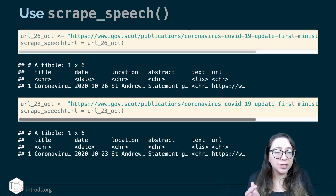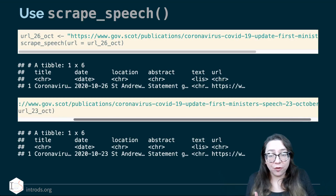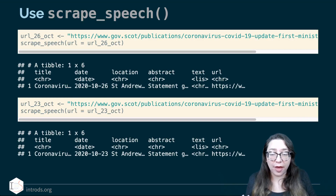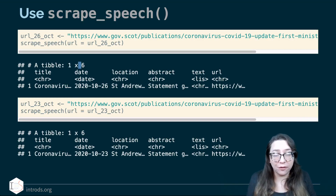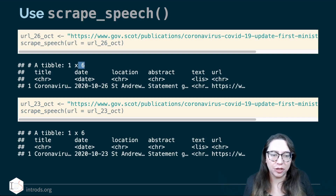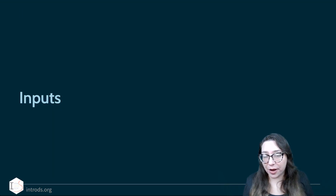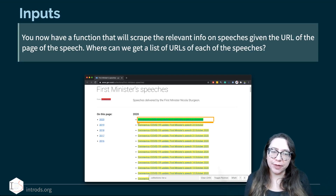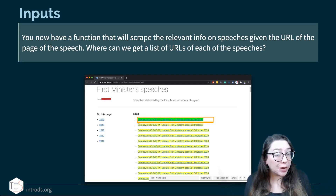From each one of these URLs, the function returns a tibble with one row for that one speech and six columns for the various attributes we want on that speech. Let's talk a little bit about our input — those URLs. You now have a function that will scrape the relevant information on speeches given the URL of the page. Where can we get a list of URLs of each of the speeches?